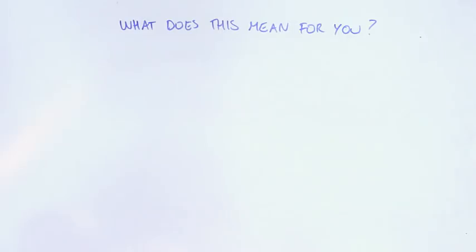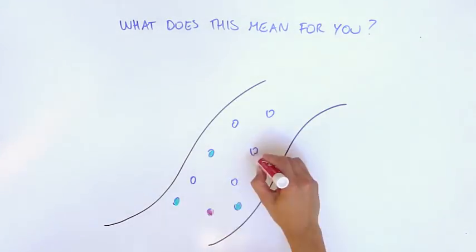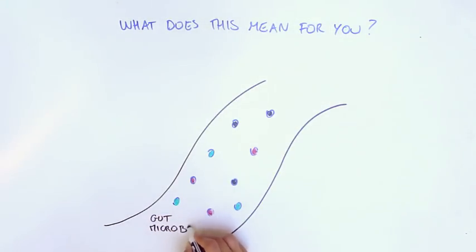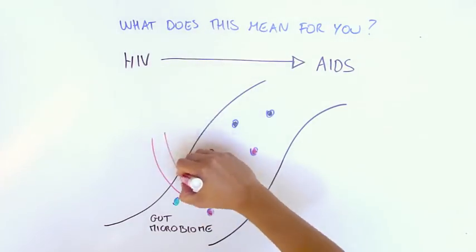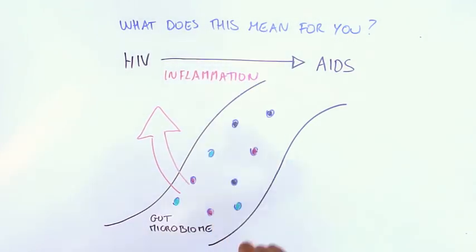So what does this mean for you? This article provides a very interesting theory that the composition of the gut microbiome could be linked to the development of AIDS from HIV infection by being a major contributor to the inflammation. But important questions remain.